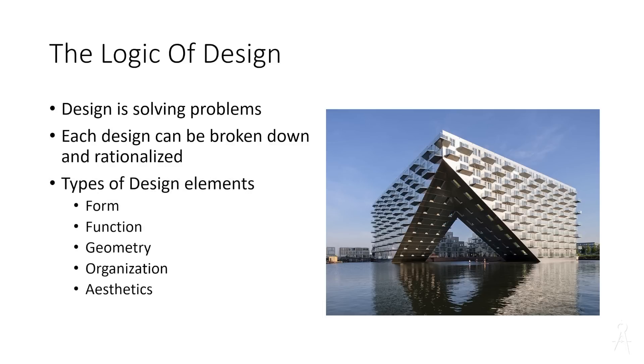And that's something that gives us a key in for where we're going with parametric design. These types of design elements are including form, function, geometry, organization, aesthetics, and many more. So pretty much logic is saying that design is already a process where there's an A and a B, and you're getting from point A to point B. You can get from point A to point D or A to Z. It depends on which problem you're solving.